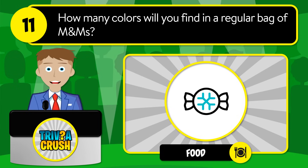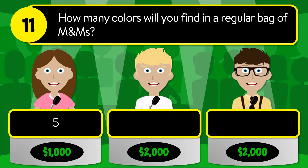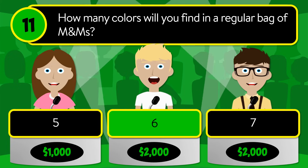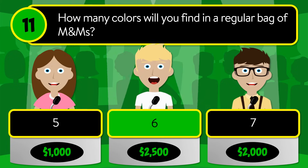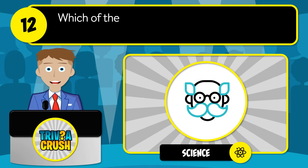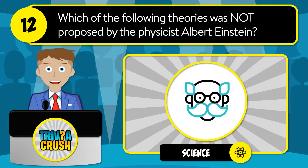Question number eleven: how many colors will you find in a regular bag of M&Ms? Is it five, six, or seven? The correct answer is six.